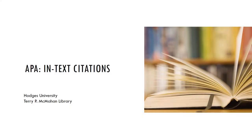As you write your paper, you will incorporate research into your writing. When you use information from somewhere else, you need to tell your reader where you got that information from. Whether you use a quote or you paraphrase, if you got the information from somewhere else you'll need to cite it. You will do that in two places: your in-text citations and your references page. In this video we will go over how to do in-text citations.